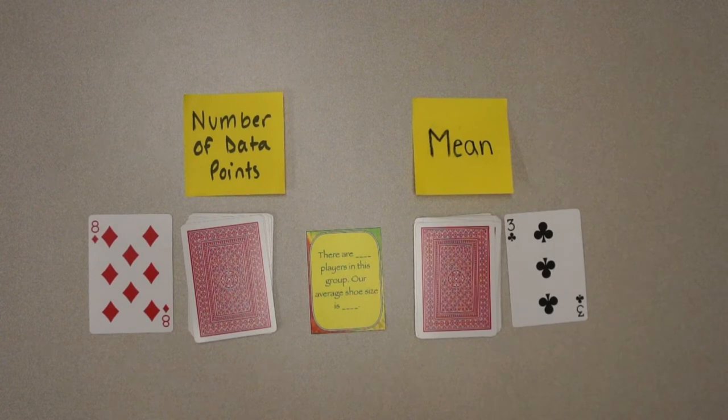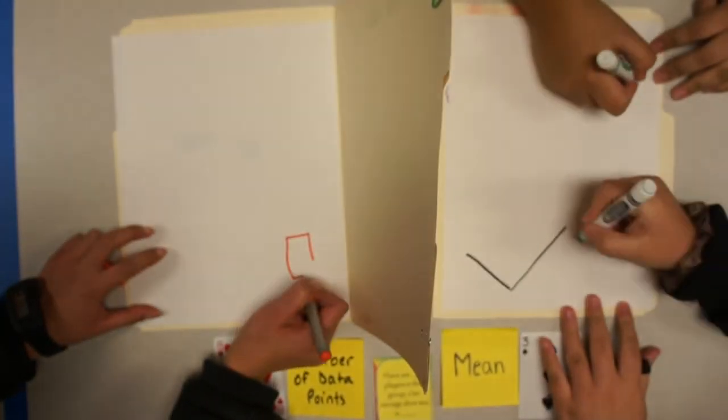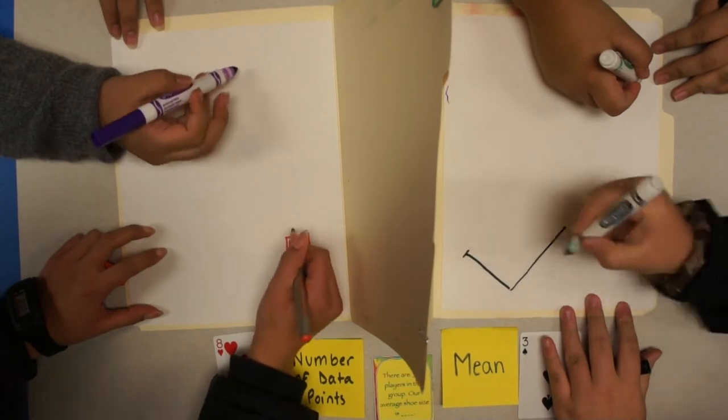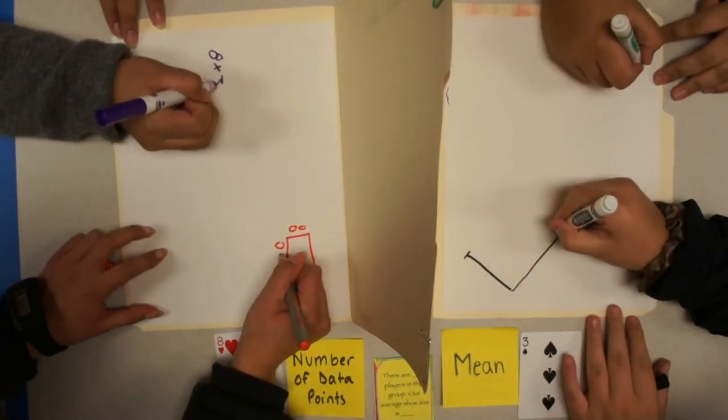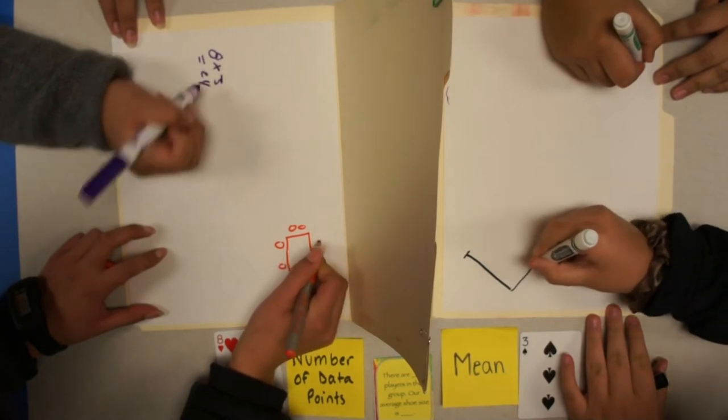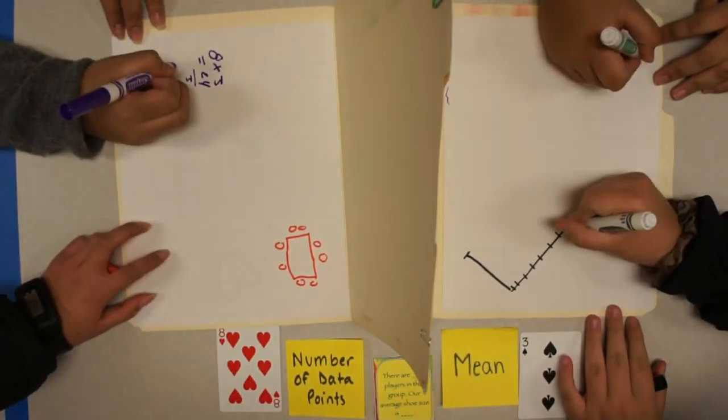Lastly, read the scenario game card aloud, including the numbers that fill in the blanks. Each team has eight minutes to create several unique statistical representations for which the number of data points, mean, and scenario are correct. For example, here students are working on a scenario where there are eight players in a group. The average shoe size is three.